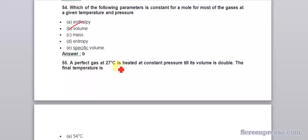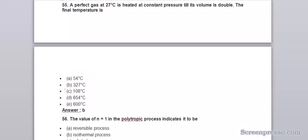A perfect gas at 27 degrees Celsius is heated at constant pressure till its volume is double. The final temperature is 327 degrees Celsius.